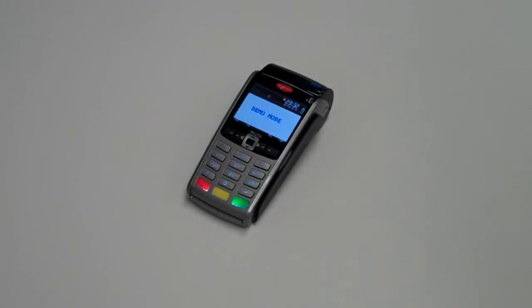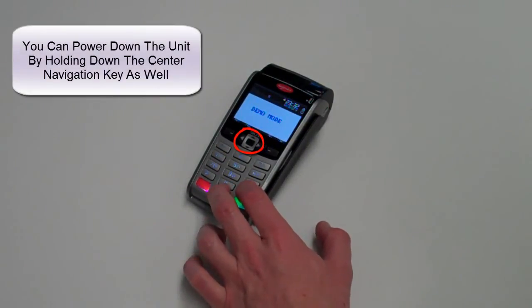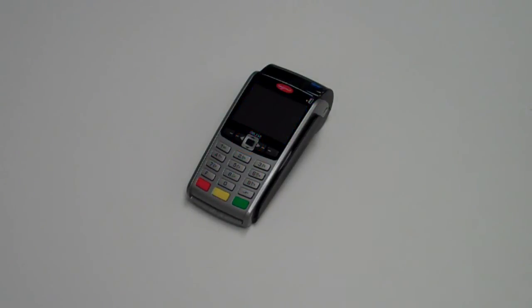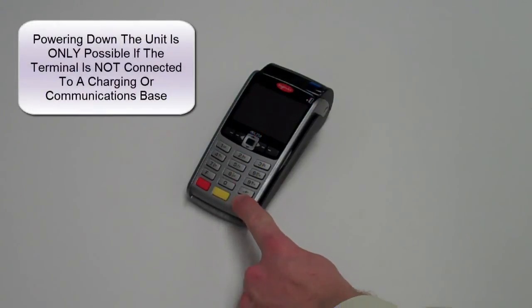To turn the terminal off, simply hold down the yellow clear key and the punctuation key that's located just above the green enter key. To turn the terminal back on, simply press the green enter key.